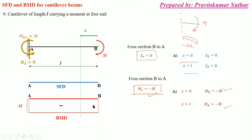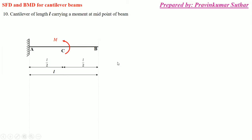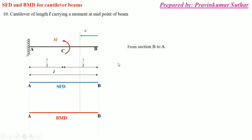Now case 10: a cantilever beam of length l having a moment at the midpoint of the beam at point C. As you can see, there is a moment capital M at the midpoint, so the distance from B to C is l/2. This is the reference for SFD and BMD, and again we will move from free to fixed end.